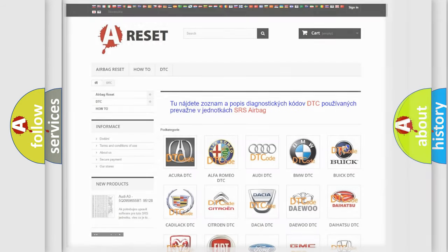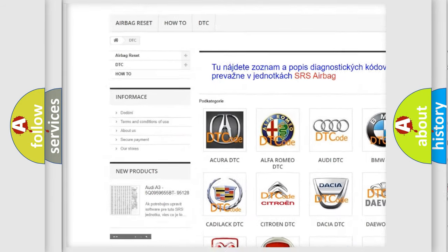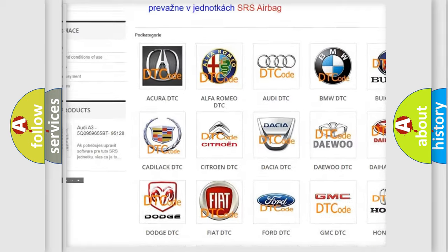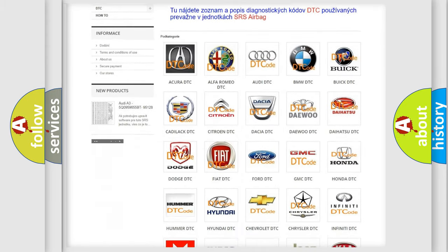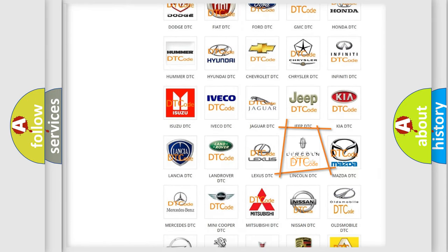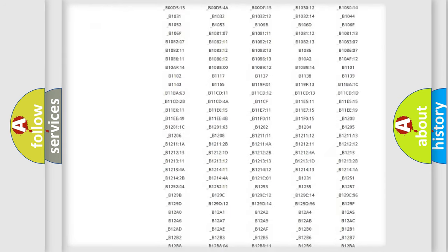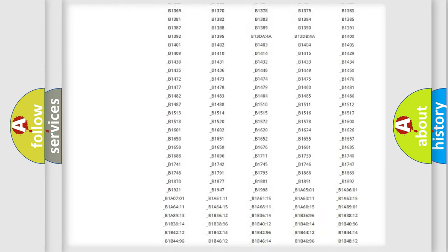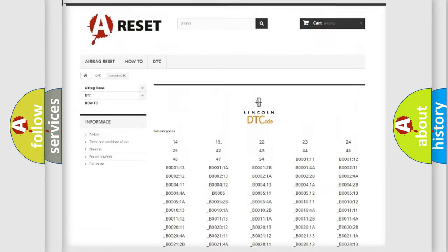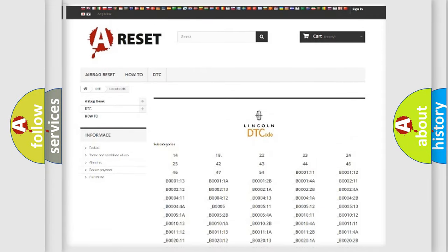Our website airbagreset.sk produces useful videos for you. You do not have to go through the OBD2 protocol anymore to know how to troubleshoot any car breakdown. You will find all the diagnostic codes that can be diagnosed in a link and vehicles, and also many other useful things.